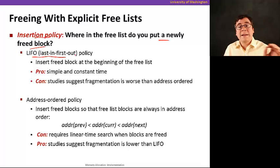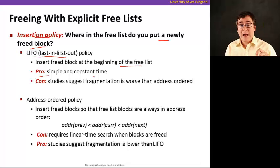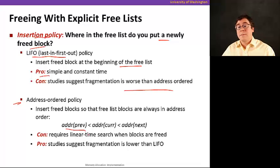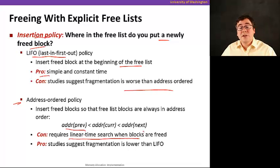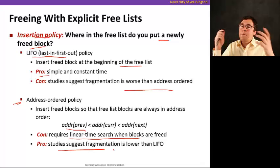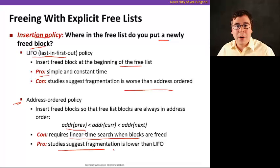The first policy is LIFO — last in, first out. You always insert a freed block at the beginning of the free list. The pro is that it's simple and constant time. The con is that studies suggest fragmentation is worse than address order. Address order links blocks such that each block's address is lower than the next. The con is it requires linear time search when freeing, but studies suggest fragmentation is lower. Memory allocation is full of heuristics — it's nearly impossible to make a provably best allocator.